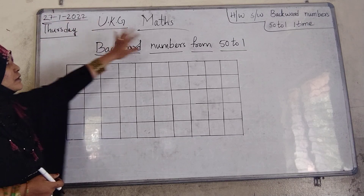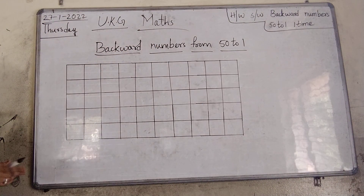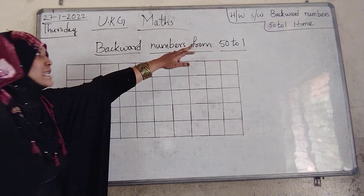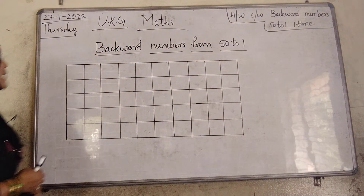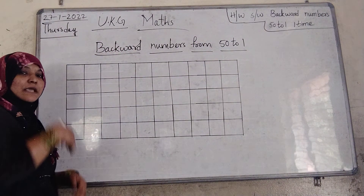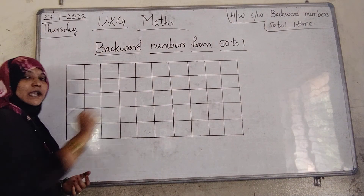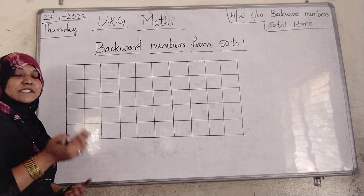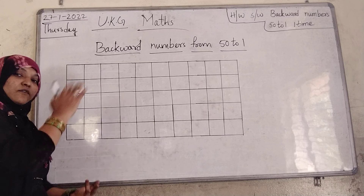Now I am going to take you Math. In Math class, we are going to write backward numbers from 50 to 1. Do you know what is meant by backward? Backward means back to front. We write numbers from 1 to 100 and 1 to 50 now. Now we are going to write the numbers from back to front, means 50 to 1.